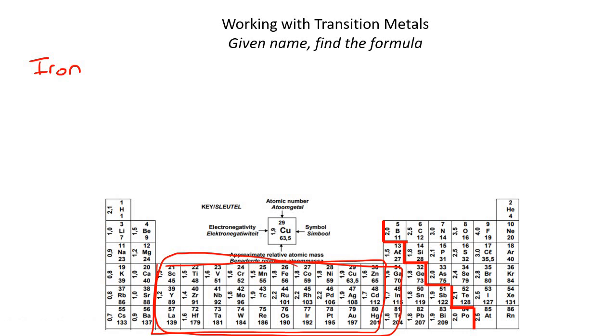So because it's a transition metal, they will always give it to you with a Roman numeral like that, and then they'll say chloride. So we now need to go and find the formula. So if you look at this, that's iron, so that's Fe.